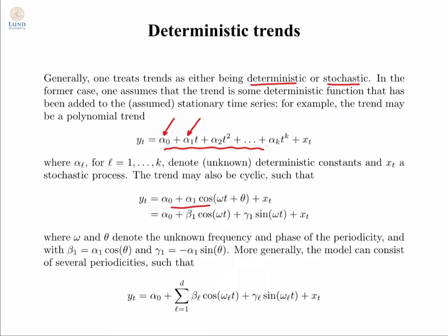The next step is to estimate the unknown parameters — we will discuss the estimation part as a separate component later on. With these components you subtract them and get a new sequence x(t), which you then model as a stationary process. The trend, cycles, and so on are incorporated into the first part of the model.